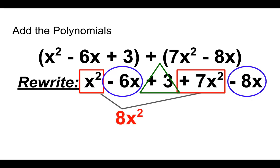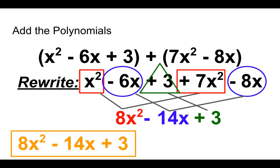Like I said before, x squared plus 7x squared gives us that 8x squared. Negative 6x minus 8x in blue gives us that negative 14x. And the plus 3 has no partner, and that's okay, you just leave it as plus 3. So the final answer is 8x squared minus 14x plus 3.